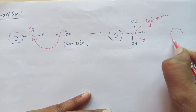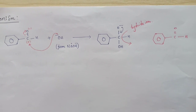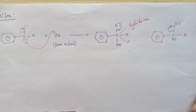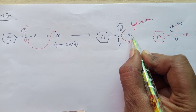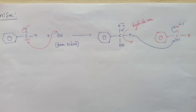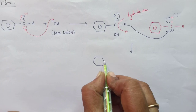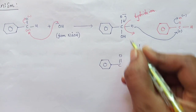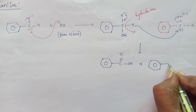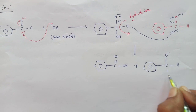Now take another molecule of benzaldehyde. For this new molecule, the same thing happens: the pi bond shifts toward oxygen, giving it a negative charge and carbon a positive charge. The hydride ion (H⁻) dissociated from the first molecule of benzaldehyde then attacks this positively charged carbon. As a result, the first molecule has the structure C=O with OH (forming benzoic acid), and the second molecule becomes benzaldehyde with C–O⁻H and an added hydride on carbon (forming benzyl alkoxide).